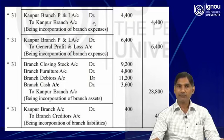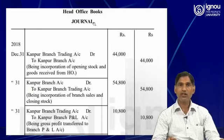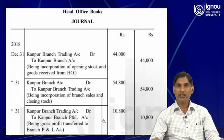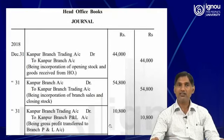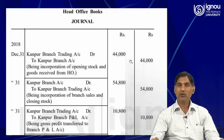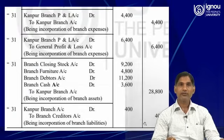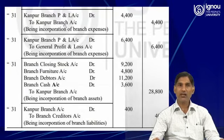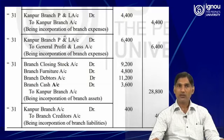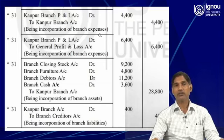This 10,800 is the gross profit because it was the total of the credit side of the trading account minus the total of the debit side of the trading account. This difference is termed as gross profit. Then the fourth entry: Kanpur branch profit and loss account debit to Kanpur branch, 4,400, for incorporation of branch expenses.